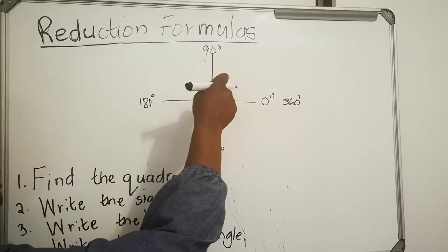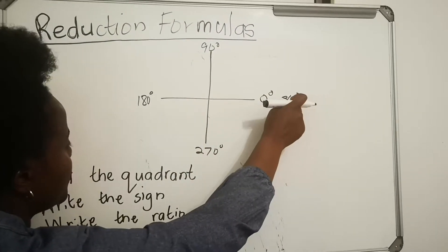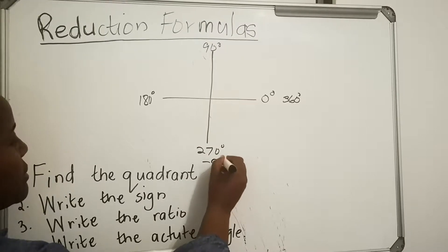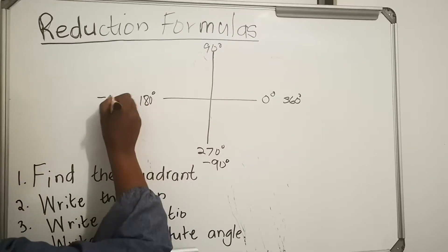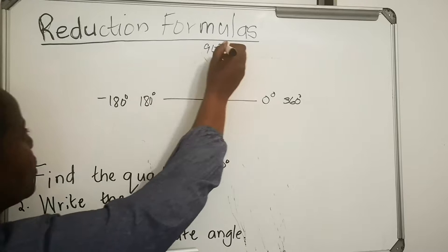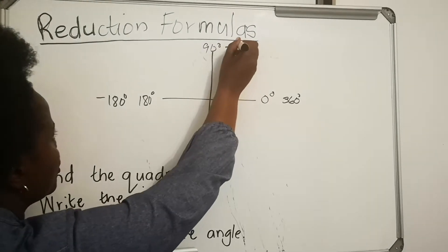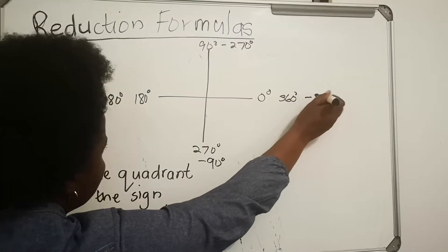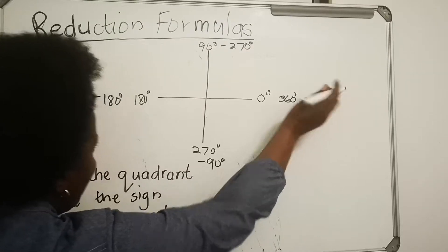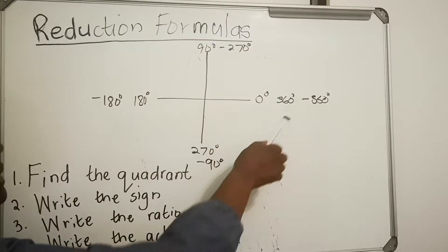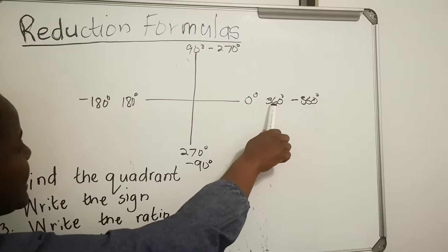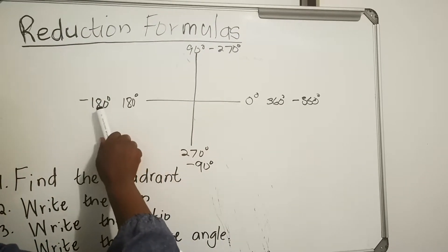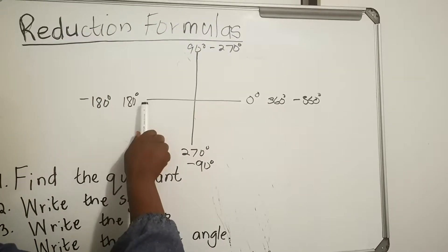When you're calculating clockwise, you get negative angles. So here it will be 0, here it will be negative 90, here it will be negative 180, and then here will be your negative 270, and then negative 360. Now what I want you to notice is that 360 and negative 360 are at the same place. 180 and negative 180 are also at the same place.